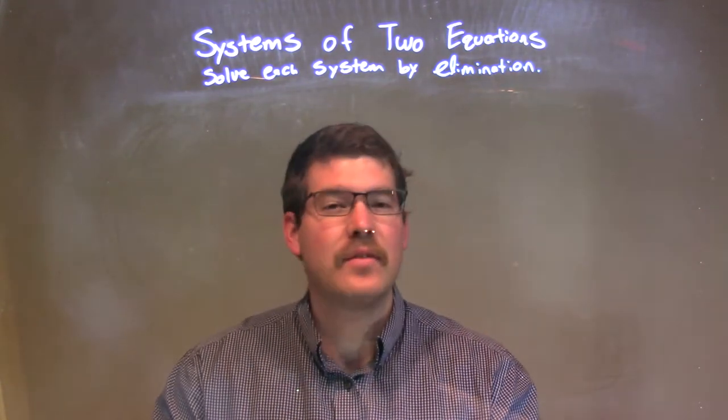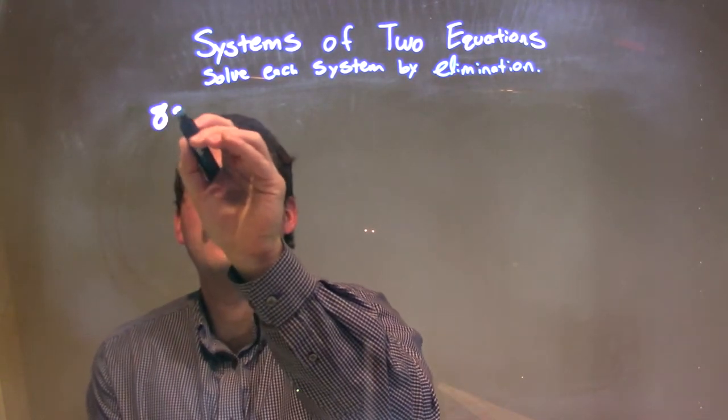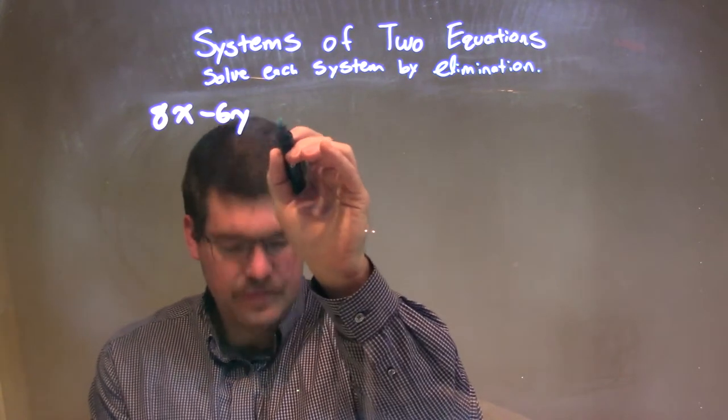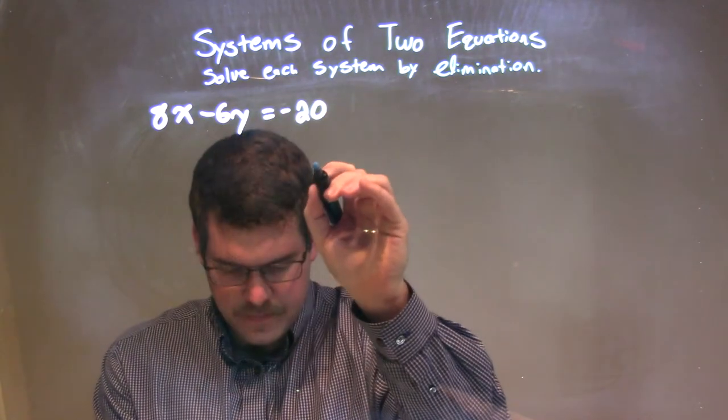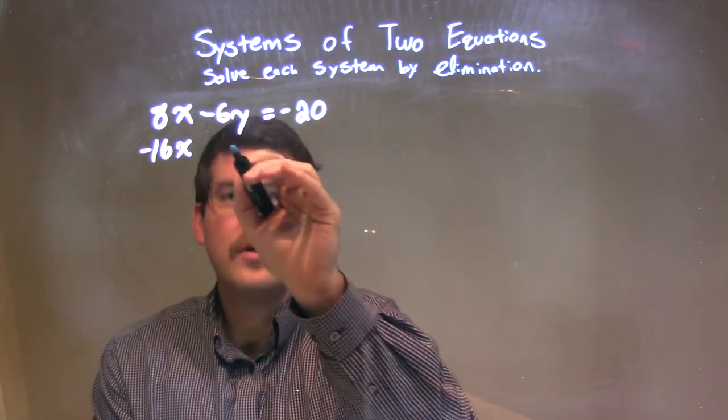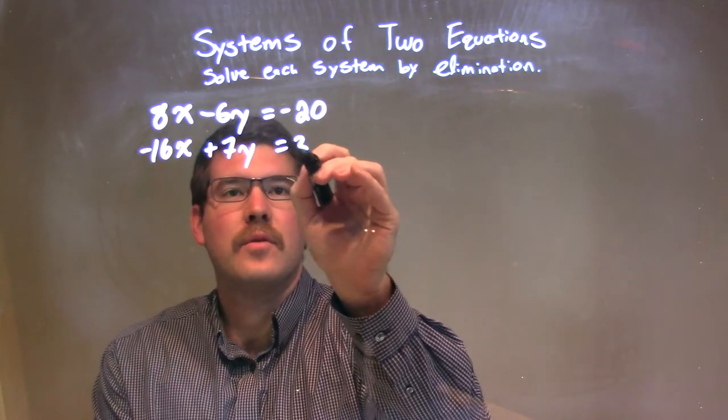So, if I was given this system, 8x minus 6y equals negative 20, and negative 16x plus 7y equals 30.